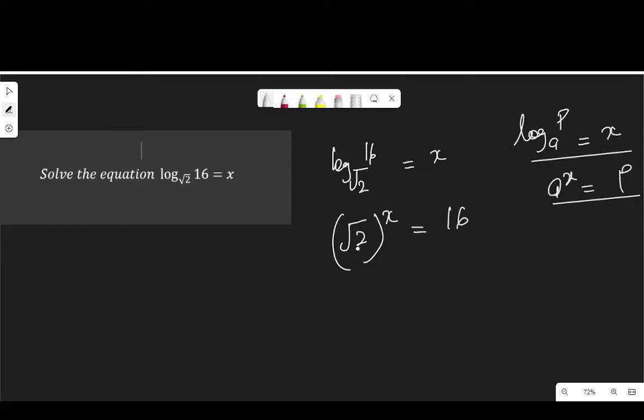That is exactly what I did right here. And we know that the square root of 2 can also be written as 2 to the power of half, 2 to the power of half to the power of x equal to 16.